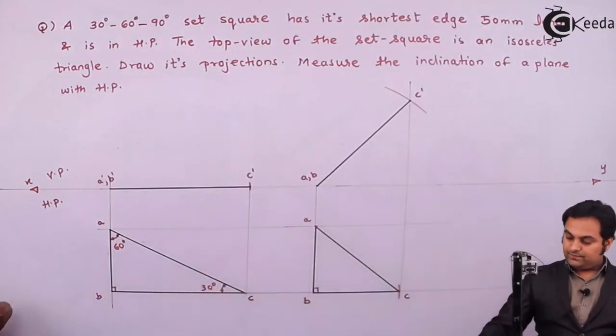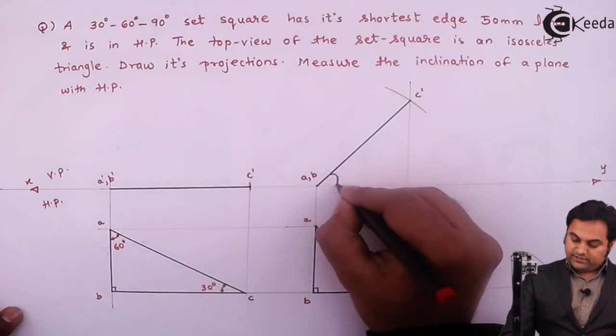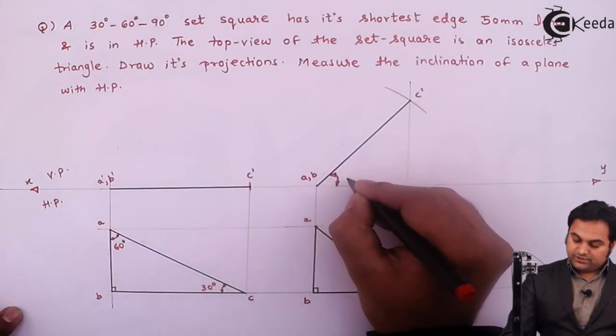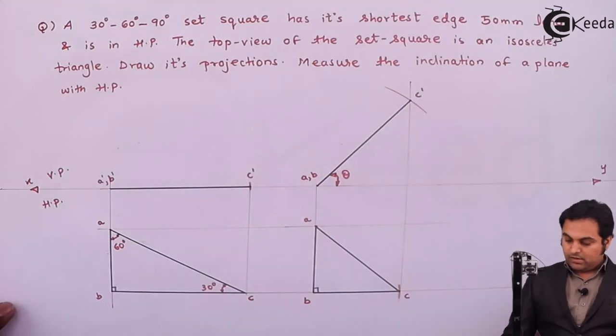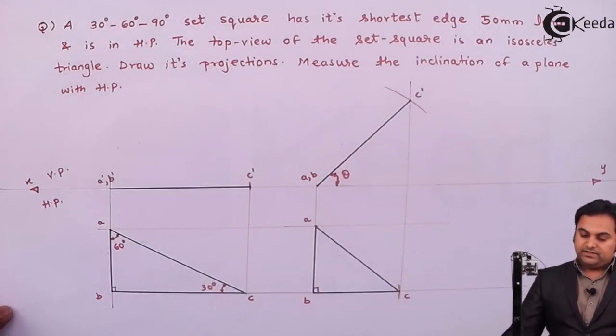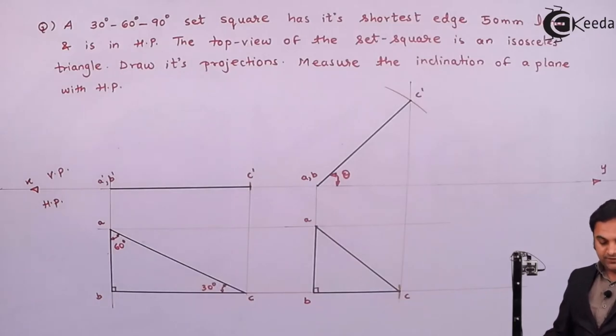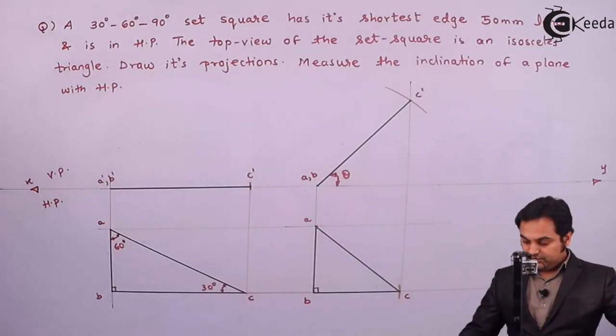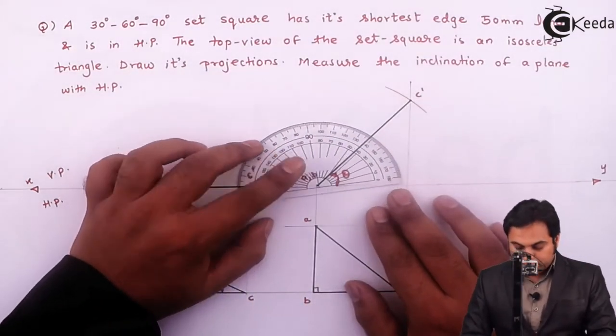So this is the inclination of the plane with HP. It is seen in VP called as theta. And here, I'll say that it is given that measure the inclination of the plane with HP. So I need to measure that. 49 degree.